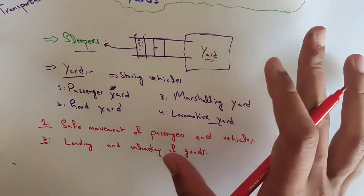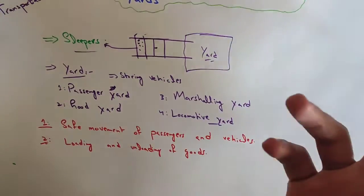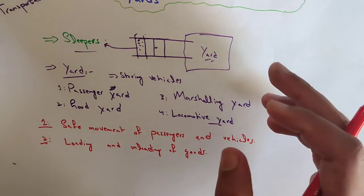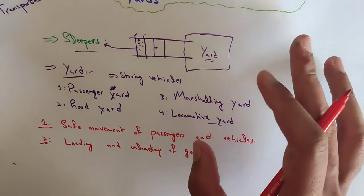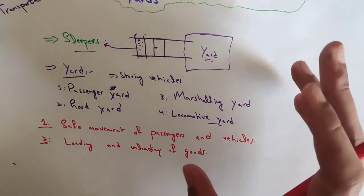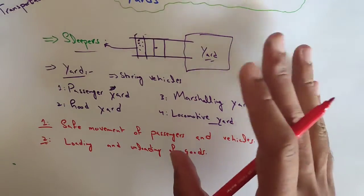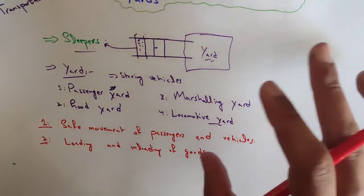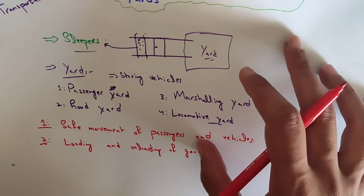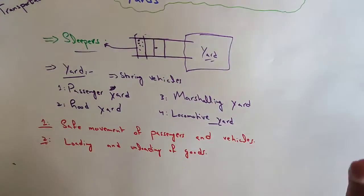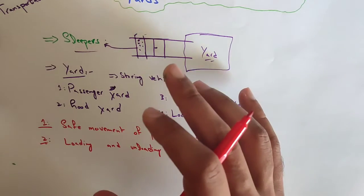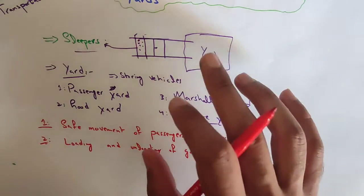Goods platforms may be treated as goods yards. Separate goods sidings could be provided at the site. It should be remembered that it is not possible to load or unload goods at all places where the train stops.